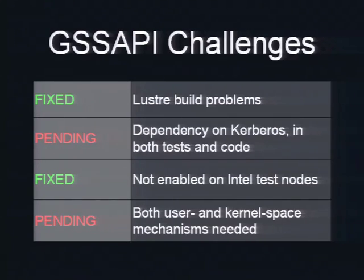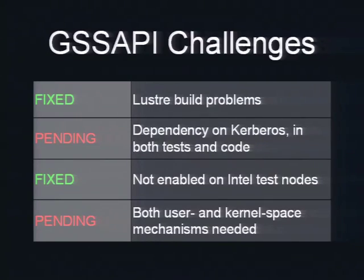We did identify some of the same challenges you've already heard about with Kerberos. First up were some build problems — Lustre master wouldn't build with enable GSS. We actually found some of Thomas' contributions that had been code reviewed but hadn't moved past that. I implemented the suggestions made by Andreas and others in the code review and got those landed. It does build now, at least with enable GSS in the Intel tree.